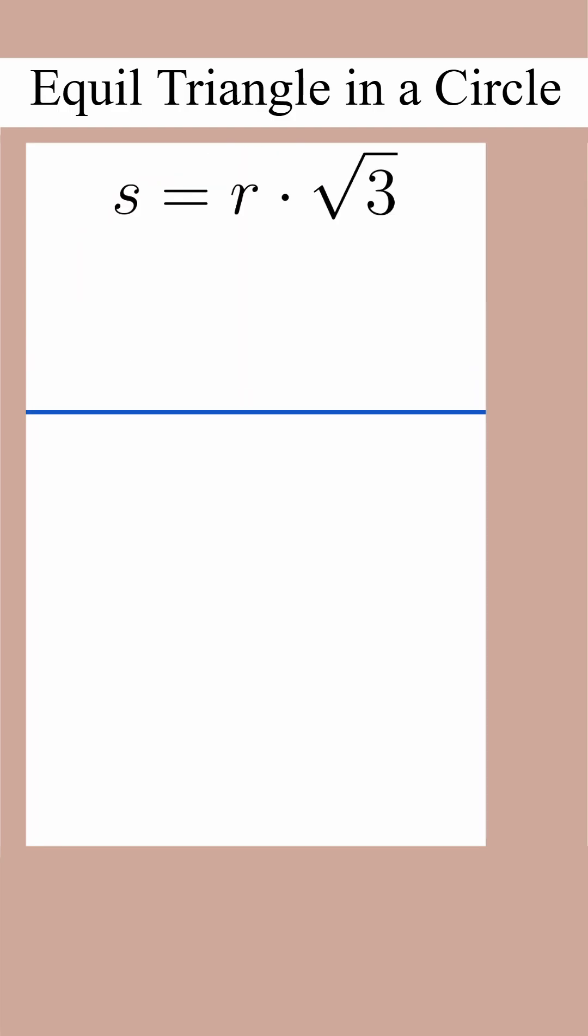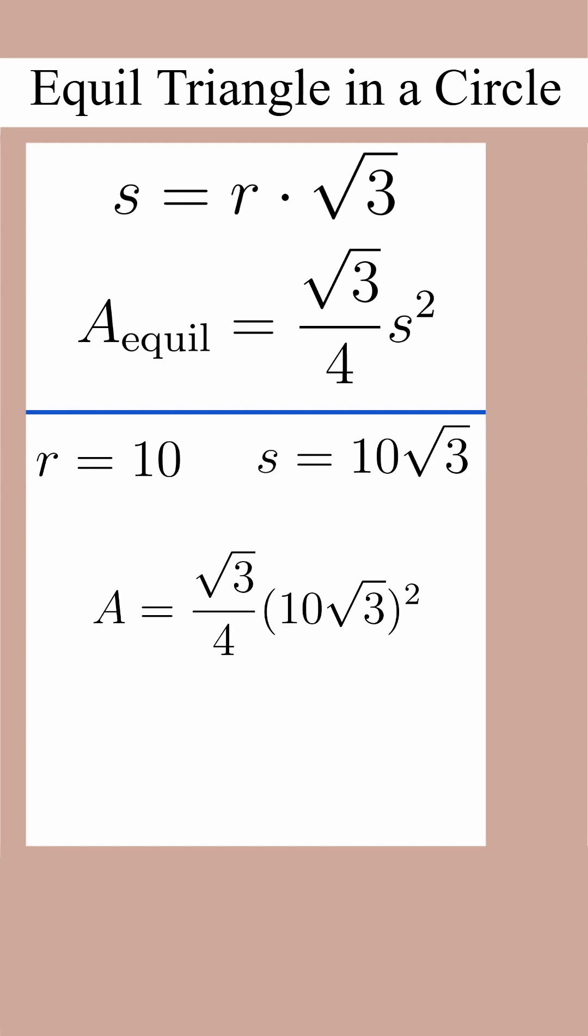So remember that equation I told you about at the very beginning that only applies to this very specific situation? Well, we can combine that with the area for an equilateral triangle, which we learned about in a previous short, and solve this problem really quick. The radius is 10. This s is equal to r root 3. The side length is 10 root 3. And if we use the area of equilateral triangle formula, we get the same thing: 75 root 3.